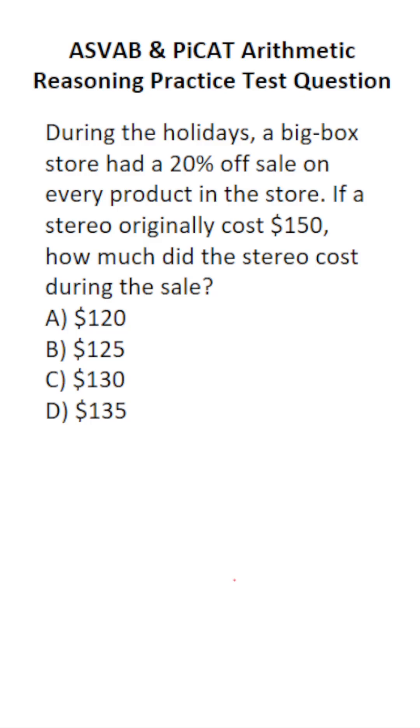This arithmetic reasoning practice test question for the ASVAB and PiCAT says, during the holidays, a big box store had a 20% off sale on every product in the store. If a stereo originally cost $150, how much did the stereo cost during the sale?